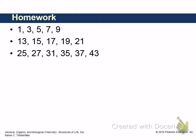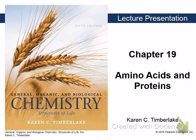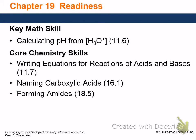Chapter 19, amino acids and proteins. There are some core chemistry skills. That first one — you really don't need to calculate the pH, but you need to know what low pH means and what high pH means. Let me explain: I'm going to make a scale going left to right. I'll put 7 in the middle — that's 7.0. I'll put 0 on this end and 14 on this end.